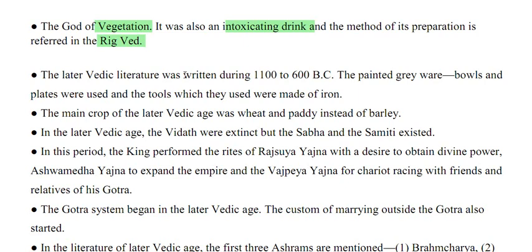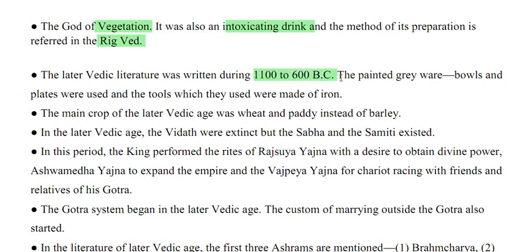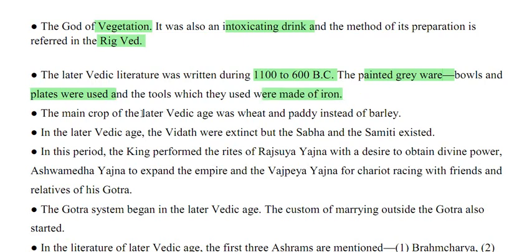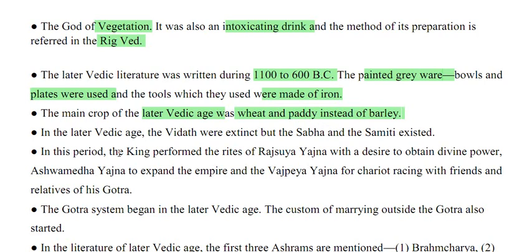The later Vedic literature was written during 1100 to 1600 BC. Painted bowls and plates were used and tools were made of iron. The main crop of the later Vedic age was wheat and paddy, instead of barley.